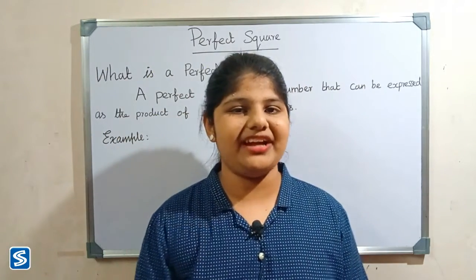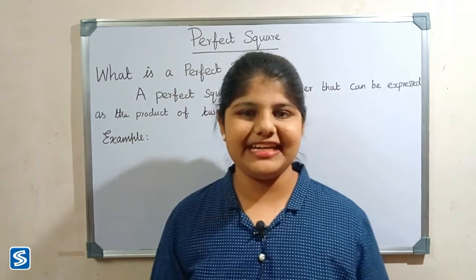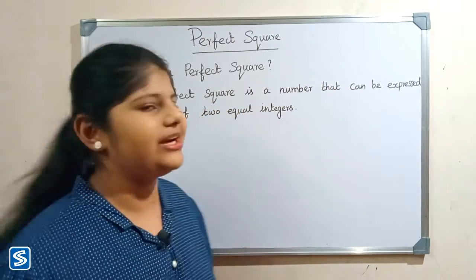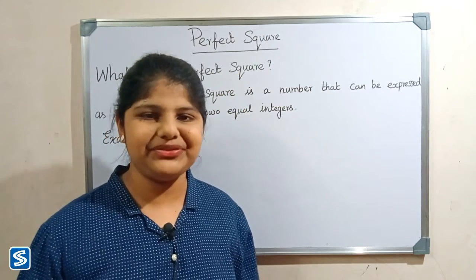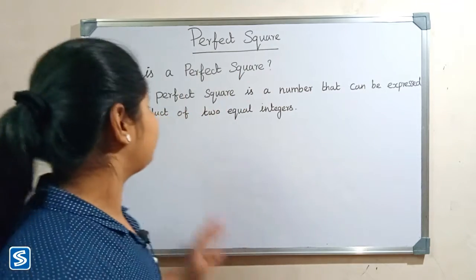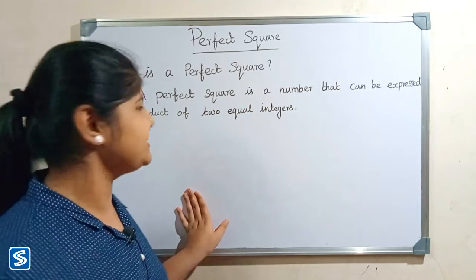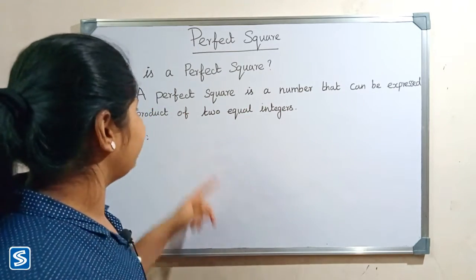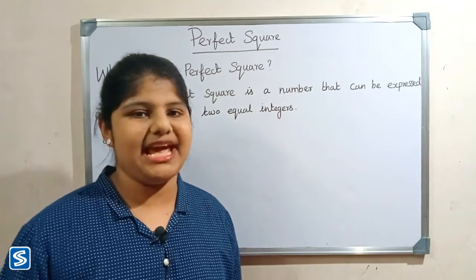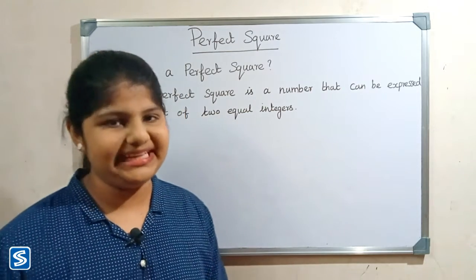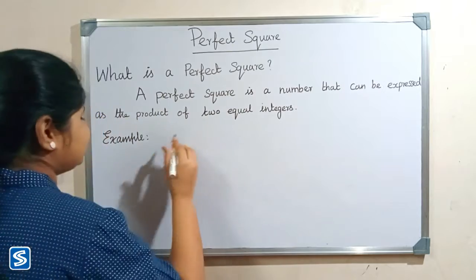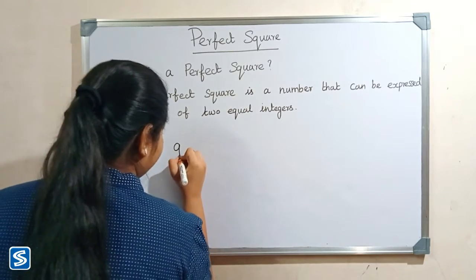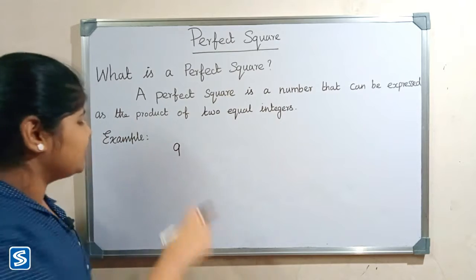Hi friends, welcome to this channel. In this video I'm going to teach how to check whether the given numbers are perfect squares or not using the prime factorization method. Before we look at some examples, we have to know what a perfect square is. A perfect square is a number that can be expressed as the product of two equal integers. Now we will take some examples — for example, we can take nine.